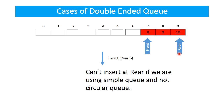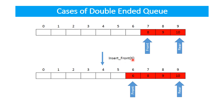Similarly, if the rear variable is at the last index — that is, max minus 1, where max value is 10 — and you are asked to insert at rear, for example insert rear 6, you cannot insert at rear because to insert at the rear end you have to increment it, move it to the right, but there is no space to the right. We are not using the circular queue concept here, so we cannot insert at rear. Instead, you can insert at the front: decrement the front variable and insert 6 at that location, as you can see in the figure.